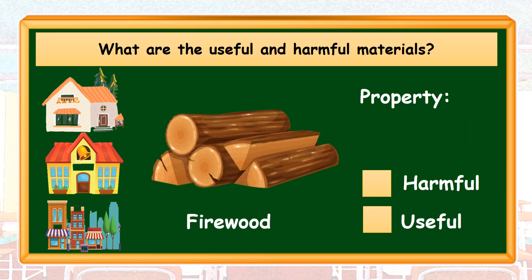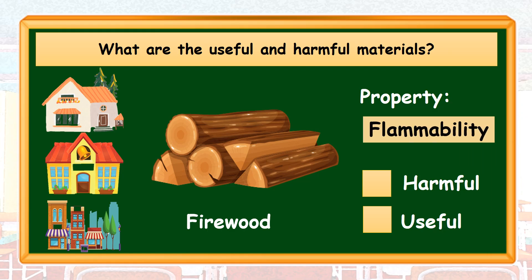We also have on the list a firewood. A firewood possesses the property of flammability, because wood is one of the materials used to start a fire. Based on its property, firewood can be harmful or useful. Its harmful effects are: number one, it produces huge fire when left unattended; number two, it creates blisters when touched with fire; and number three, it can cause skin injury if we handle it improperly. For its usefulness, it allows us to cook our food.